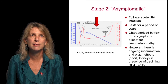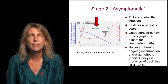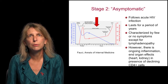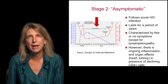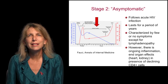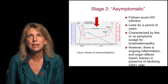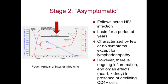After primary infection and seeding of lymphatic tissues, stage 2 follows, which has been called asymptomatic. This stage lasts for a period of years. It is characterized by few or no symptoms except for lymphadenopathy. However, the term asymptomatic is misleading because during this time period, due to the replication of HIV, there is ongoing inflammation and end-organ effects in, for example, the heart and kidney, in the presence of declining CD4 cells.